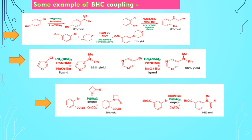Here I have explained some examples of the BHC coupling reaction. Various compounds can be made by this coupling. The first example is coupling of an aryl halide with an amine in the presence of palladium as catalyst and a base to give a coupled product. In other examples, similarly, palladium and the base are used and we get a coupled product — see here the nitrogen-carbon bond is formed.